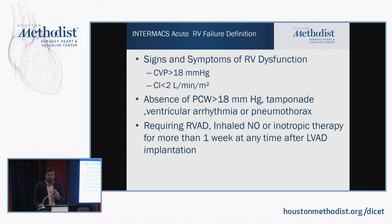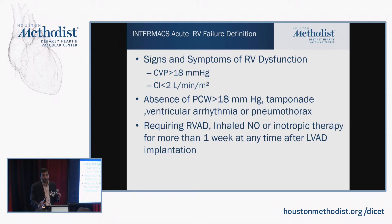Quickly changing gears to RV failure — I'll just cover a few things. The INTERMACS definition, which is a registry for mechanical circulatory support, applies here. RV failure used to be a concern mainly for congenital heart disease and PH specialists, but with LVADs it's become much more prominent — it's the Achilles heel in long-term LVAD support. The INTERMACS definition of RV failure is high CVP and low cardiac index, with severity graded from mild to severe based on whether mechanical support or just inotropes are needed.